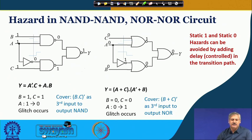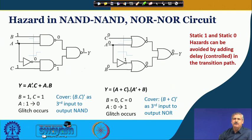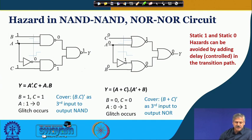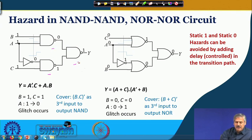So far we have seen Static-1 and Static-0 Hazard using AND-OR and OR-AND two-level circuits. If we use NAND-NAND or NOR-NOR for realization of a two-level circuit, what would the case be? In a NAND-NAND realization of a-prime-c plus a-b, we have two first-level NAND gates and a final NAND gate combining their outputs. This is familiar from De Morgan's theorem applied to AND-OR circuits.